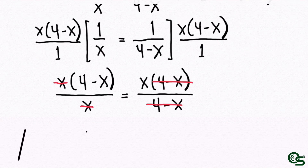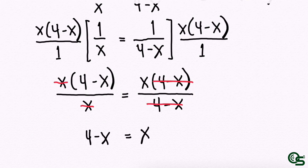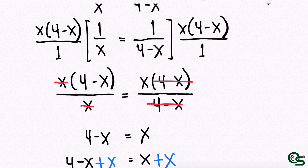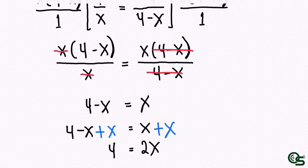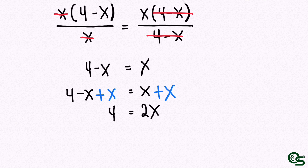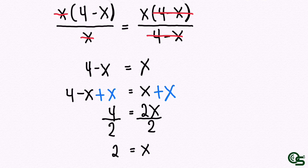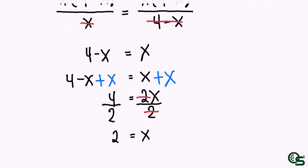This becomes 4 minus x is equal to x. Applying the addition property of equality: 4 minus x plus x equals x plus x, giving us 4 equals 2x. Using the division property of equality, divide both sides by 2: 4 divided by 2 is 2, and 2x divided by 2 is x. By symmetric property of equality, therefore x is equal to 2.